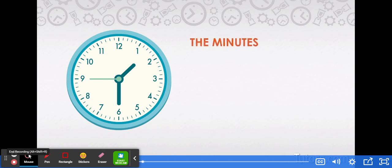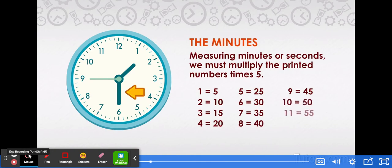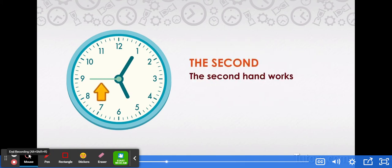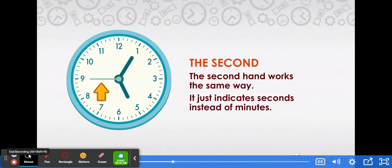Next, we determine the minutes. When measuring minutes or seconds, we must multiply the printed numbers times five. When the minute hand is pointing to the one, it indicates five minutes past the current hour. The second hand works the same way. It just indicates seconds instead of minutes.